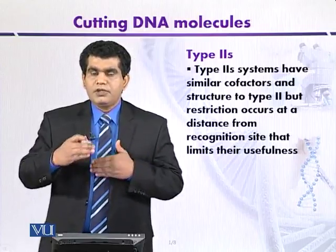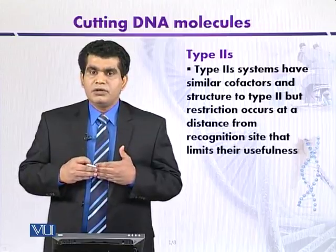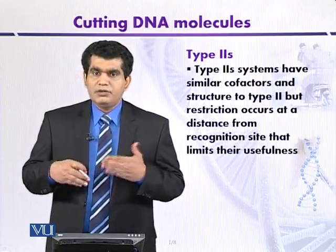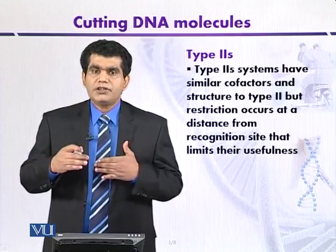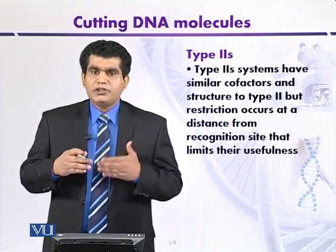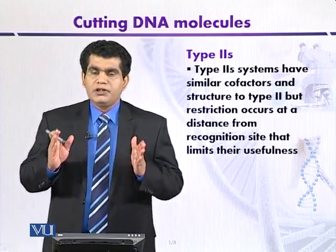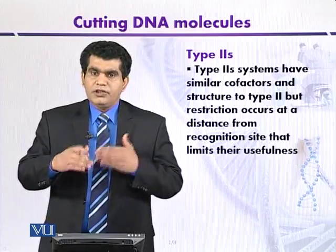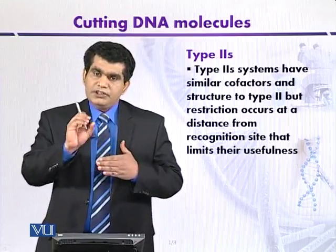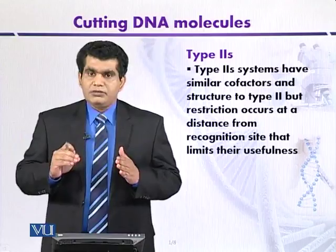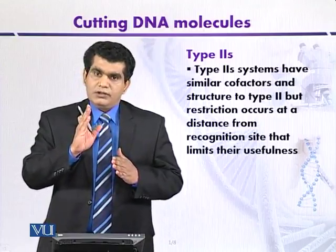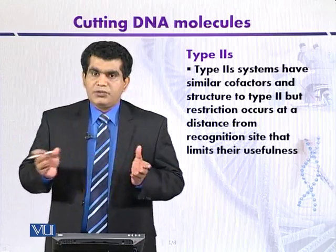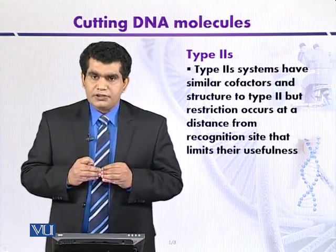So type 2 restriction endonucleases are mainly used. Why are they called endonucleases? Because they can cut inside the DNA — not at the margin, but within the central point of the DNA. That's why they are called endonucleases.